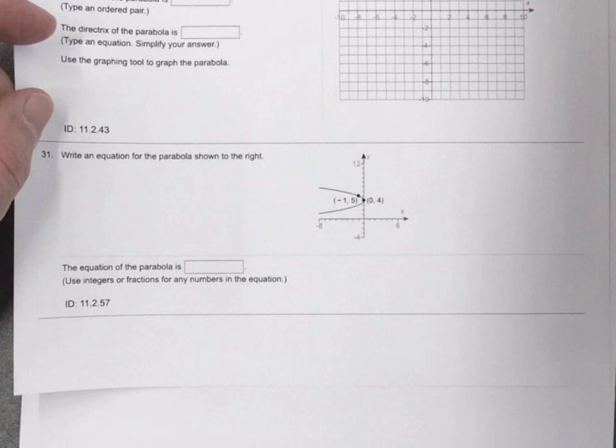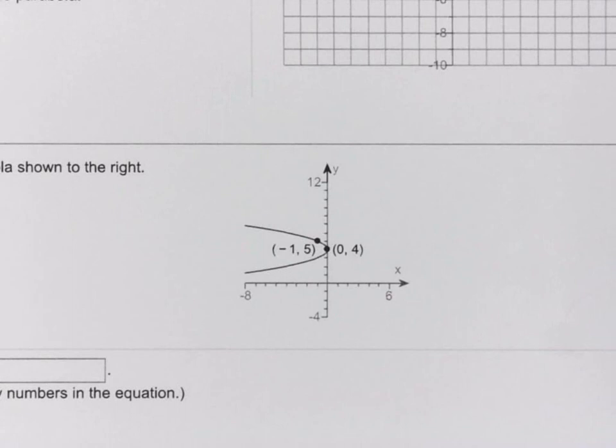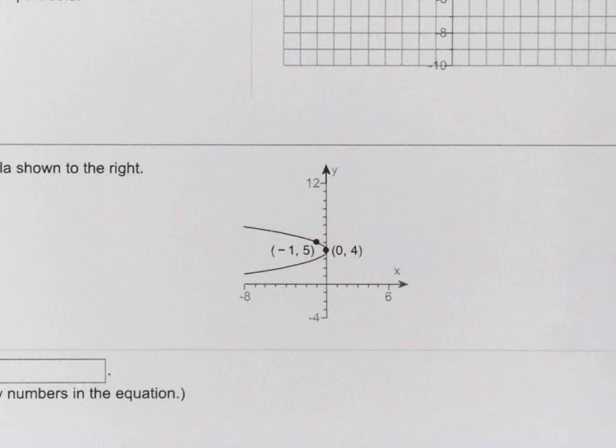So let me put it up here and try and zoom in on this so you can see it. Basically, they want the equation of this parabola. So it looks like, obviously, it's a parabola that opens to the left. It looks like they point out the vertex is (0, 4), and then they give us just a point, a random point on the parabola. And they want the equation.